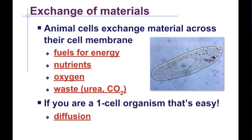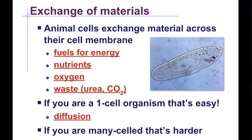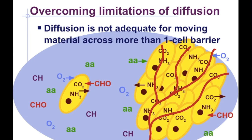That movement, if you recall from first semester, is dependent on a concentration gradient, and it is actually a relatively slow process if you're trying to move materials more than a distance of a few millimeters. So if you are an organism composed of many cells, that becomes a bit more challenging. Movement by diffusion is proportional to the square of the distance traveled. For example, if a quantity of glucose takes one second to diffuse 100 micrometers, then it'll take 100 seconds to diffuse one millimeter, and that equates to approximately three hours to diffuse just one centimeter.